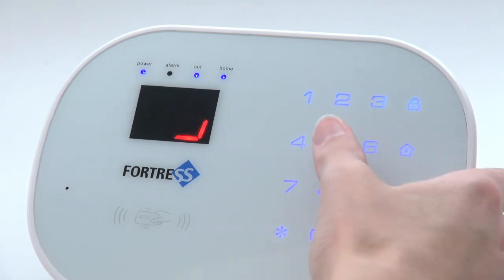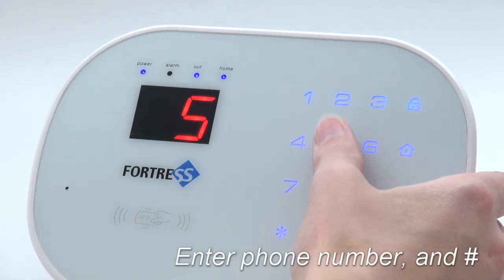After choosing a slot, enter the desired phone number. You will need the area code and may need the country code depending on your location. Press pound to save.